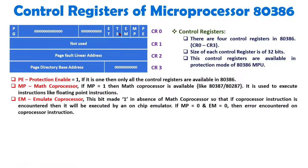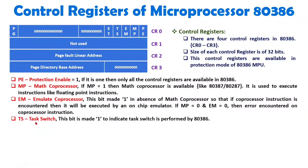Now let us understand the TS bit, which means Task Switch bit. In task switching, whenever task switching is performed by 80386, this bit will be set to 1 automatically. If it is 1, it indicates that task switching is happening right now — that is, task switching is being performed by 80386.